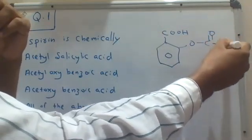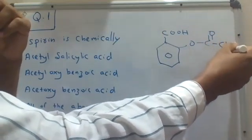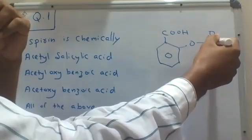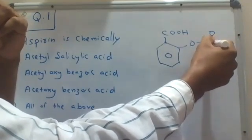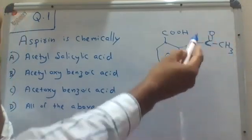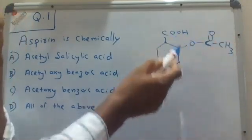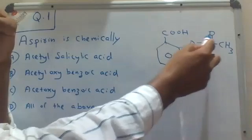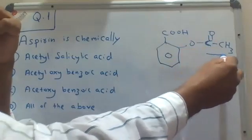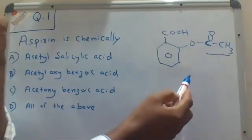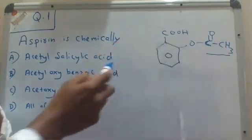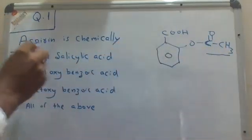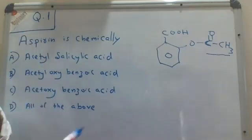Now in the salicylic acid, if you replace the hydrogen of the hydroxyl group with an acetyl group — the acetyl group is the CH₃CO group — then the resulting compound is called aspirin.